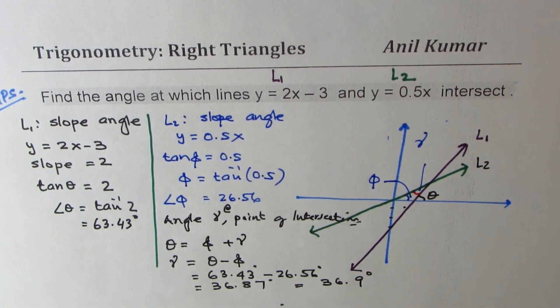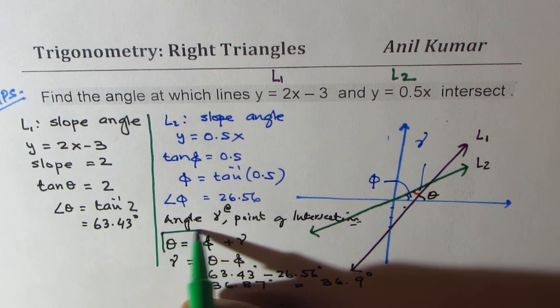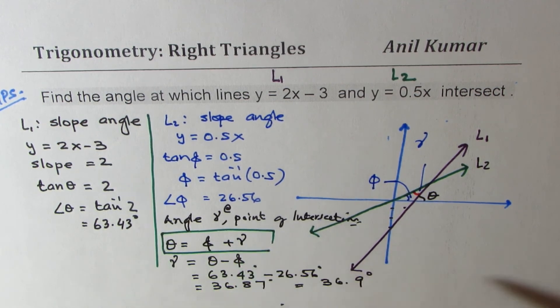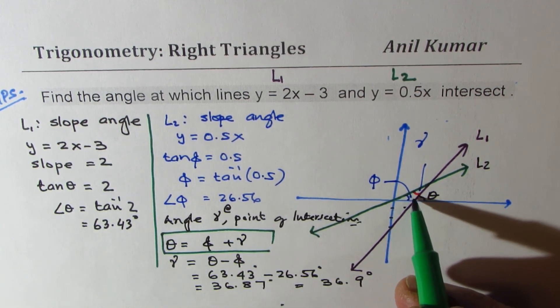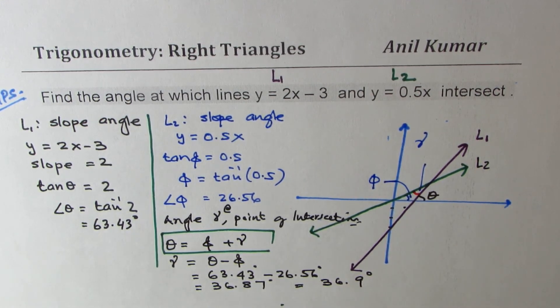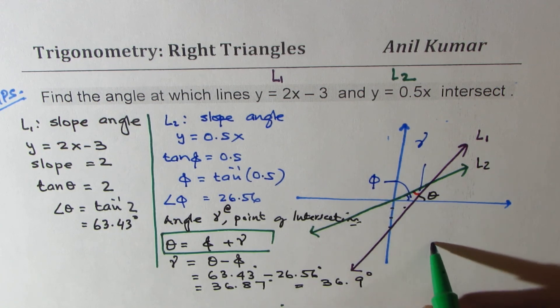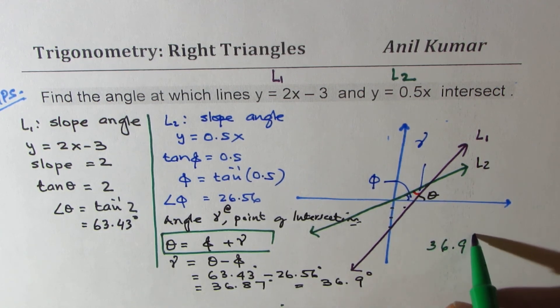So that is how you could find it. We use the external angle property to finally get the answer. However, you could find this angle with 180 minus theta and then also do it. So you can do alternate methods. However, this is more efficient, using external angle. So what we find here is that the angle at which these lines intersect is 36.9 degrees.